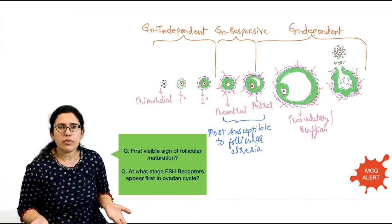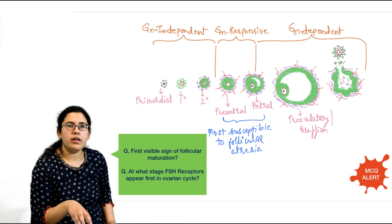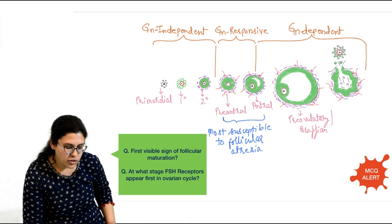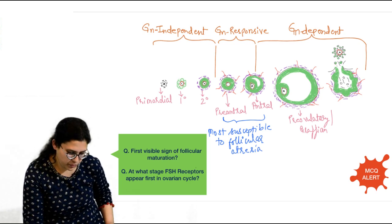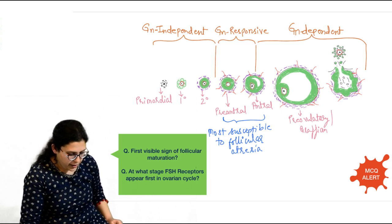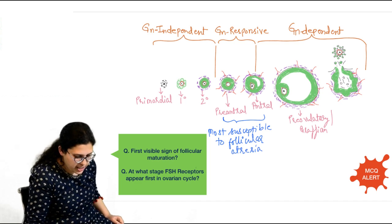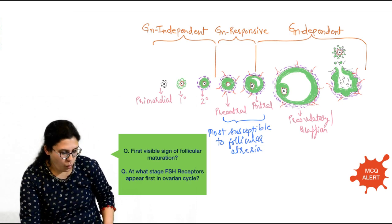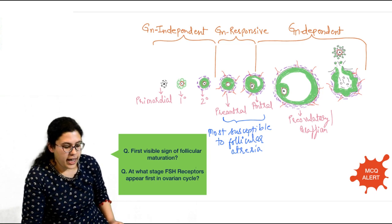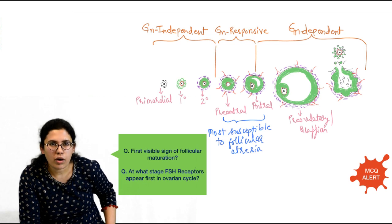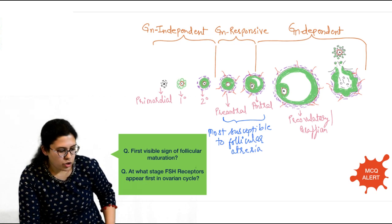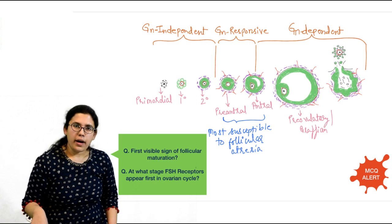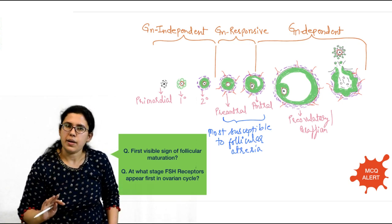The rest of the cohort undergoes atresia — this is the stage where competition starts. Pre-antral and antral follicles are the stages where maximum atresia happens. An important MCQ: at what stage do FSH receptors appear first in the ovarian cycle? If pre-antral follicle is in the options, mark that; if not, mark secondary follicle. This is when vascularization has started and FSH can now act on its receptors.